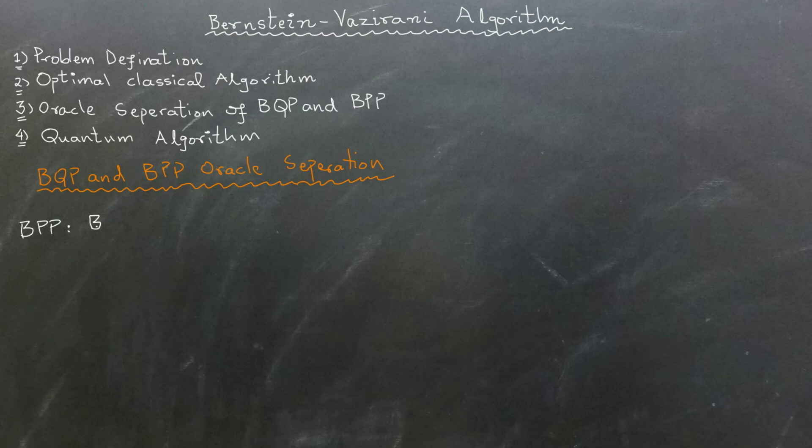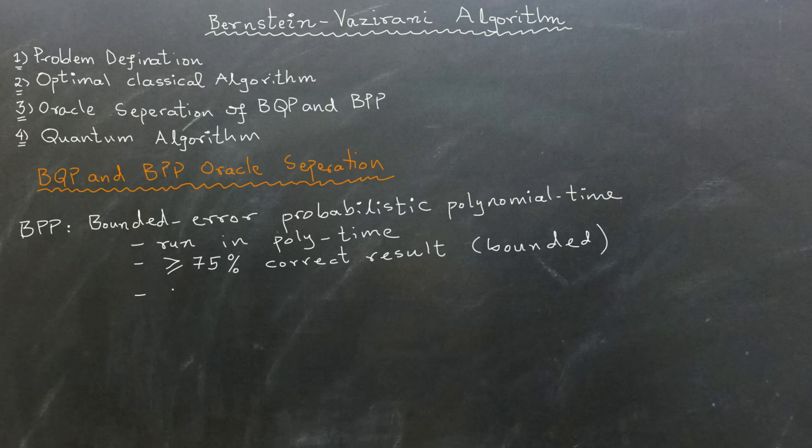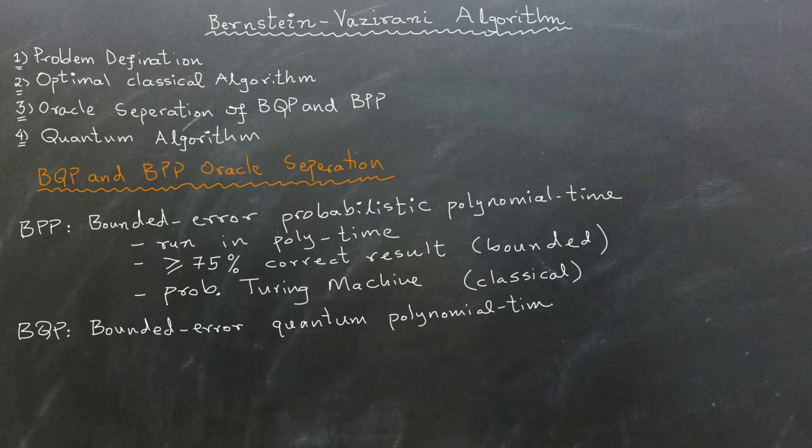BPP stands for Bounded Error Probabilistic Polynomial Time. This complexity class contains all algorithms that run in polynomial time and produce the correct result more than 75% of the time using a probabilistic Turing machine. In contrast, BQP stands for Bounded Error Quantum Polynomial Time. This complexity class contains all algorithms that run in polynomial time and produce the correct result more than 75% of the time on a quantum computer.